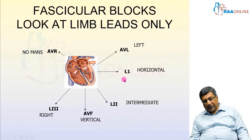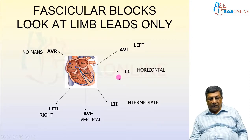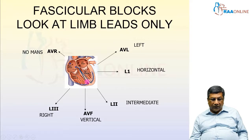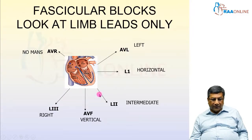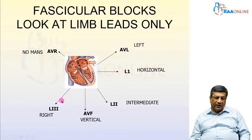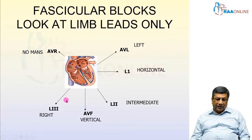Fascicular blocks are going to produce either left axis deviation or right axis deviation. You are not going to diagnose a fascicular block in the presence of a normal axis or indeterminate axis. We must suspect fascicular blocks only when there is left-axis deviation or right-axis deviation. Right-axis deviation shows the tallest R-wave in L3 and deepest S-wave in AVL; left-axis deviation shows the tallest R-wave in AVL and deepest S-wave in L3. Normal or indeterminate axis almost excludes fascicular blocks.